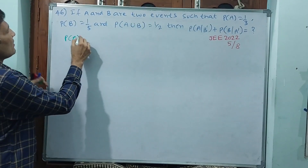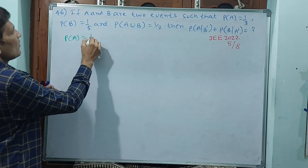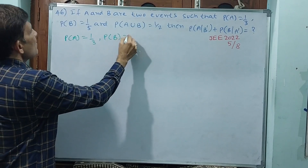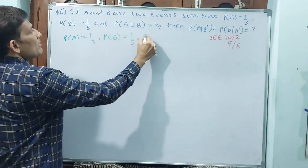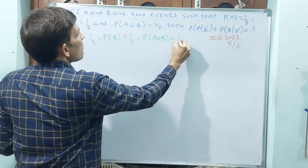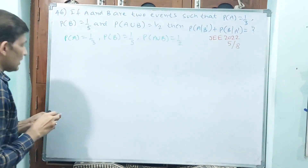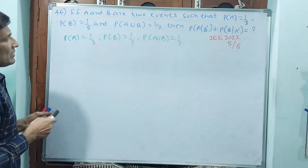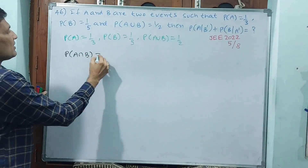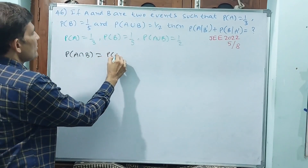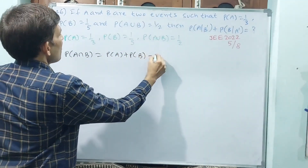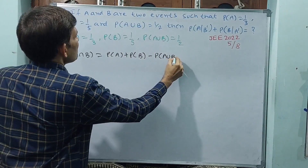See the data is: probability of A is 1 by 3, probability of B is 1 by 5, probability of A union B is 1 by 2. We can find A intersection B also from this. Write down: probability of A intersection B is equal to probability of A plus probability of B minus probability of A union B.